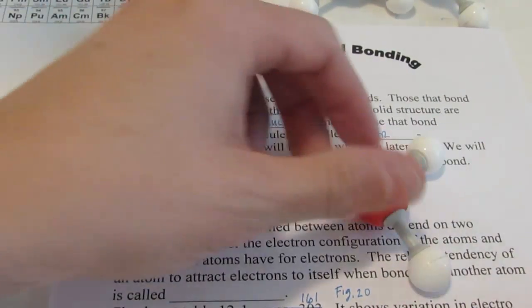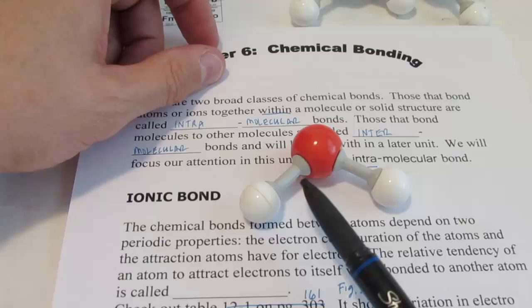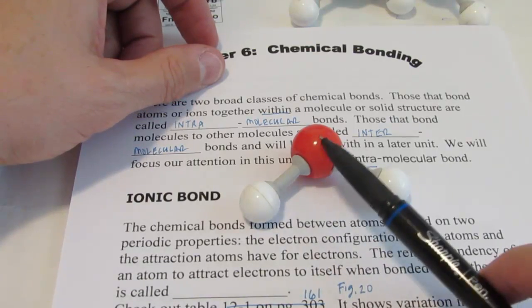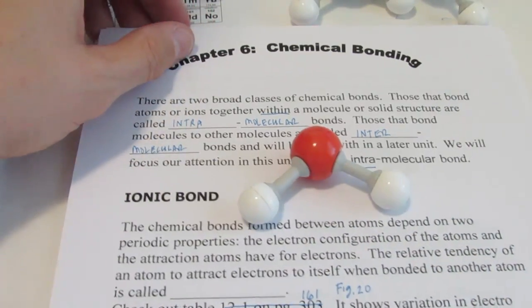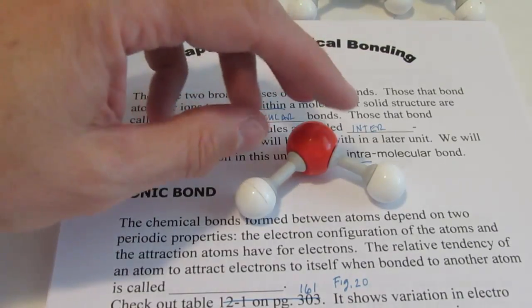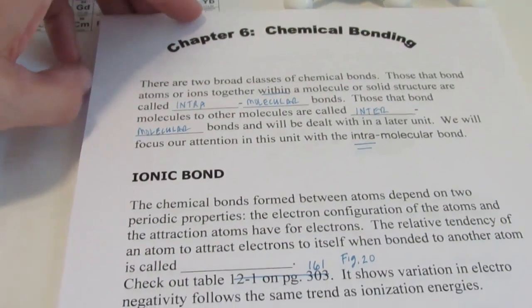We're going to spend most of our time in this unit talking about these guys right here. The bonds that hold atoms together within a molecule or ions together within an ionic lattice. Those are the intramolecular bonds.